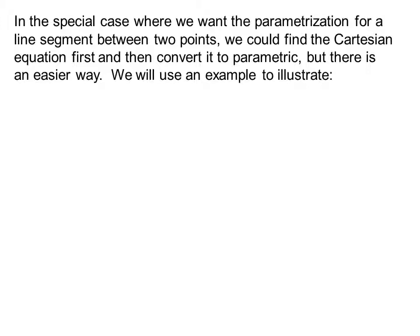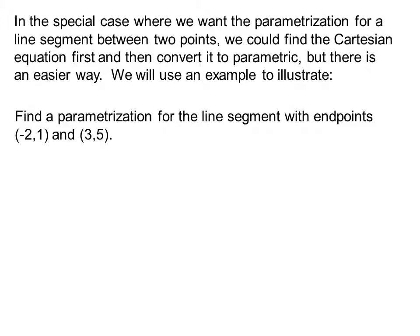In the special case where we want the parametrization for a line segment between two points, we could find the Cartesian equation first and then convert it to parametric, but there is an easier way. We will use an example to illustrate. Find a parametrization for the line segment with endpoints (-2,1) and (3,5).